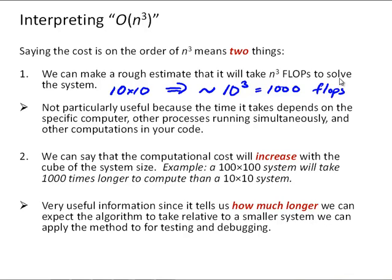Now, that's not particularly useful because the time it takes to execute a single flop depends on the specific computer, whether other processes are running simultaneously, and what else is going on in your code. But a more useful thing is to know that the computational cost will increase with the cube of the system size. So, we know that a 100 by 100 system will take approximately 1,000 times longer to compute than a 10 by 10 system.